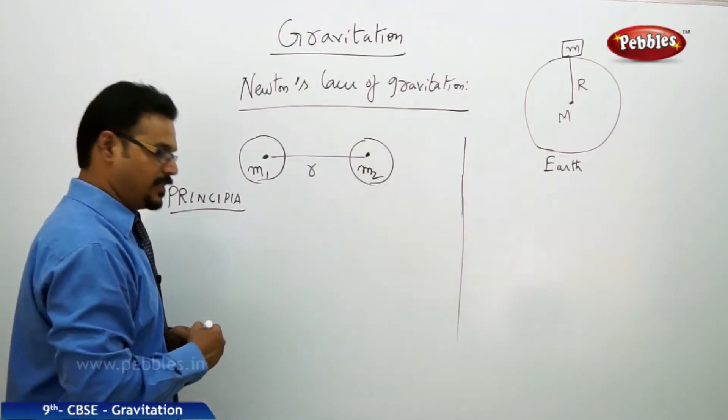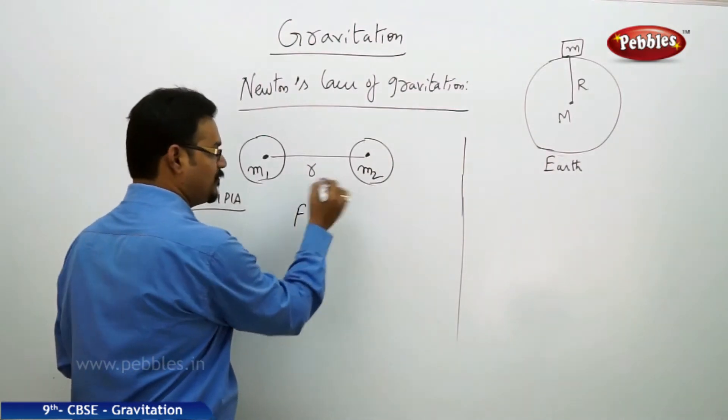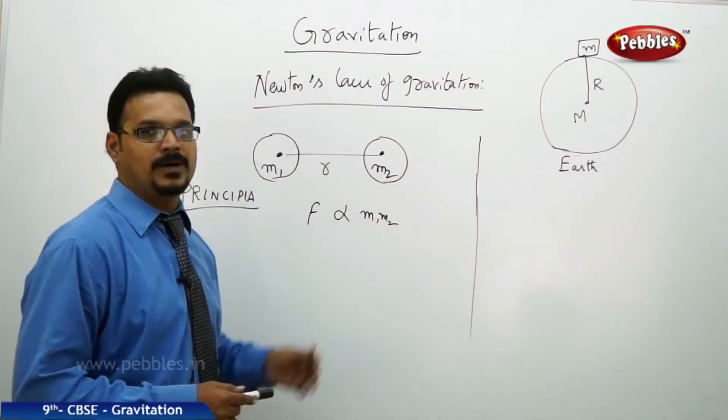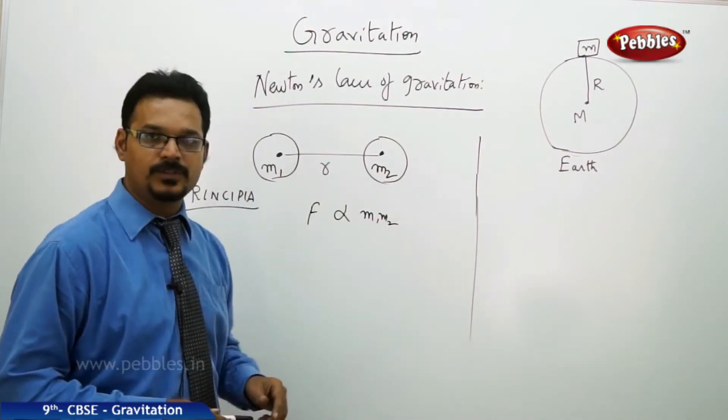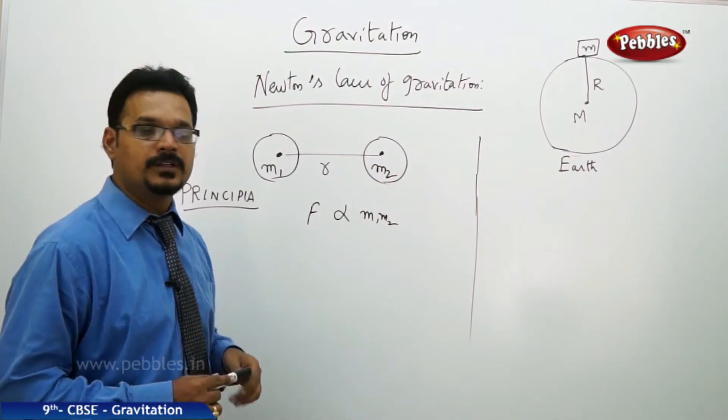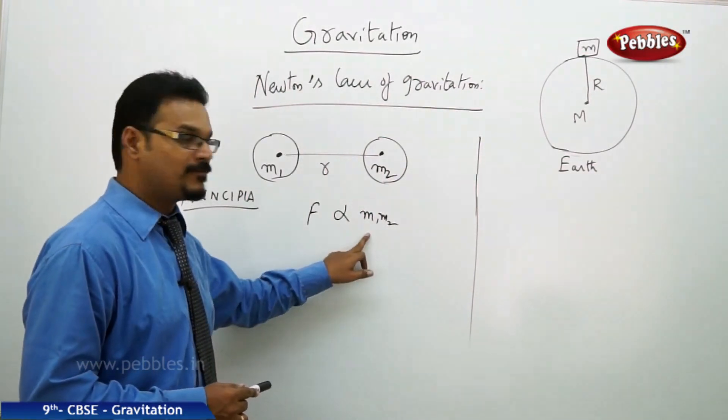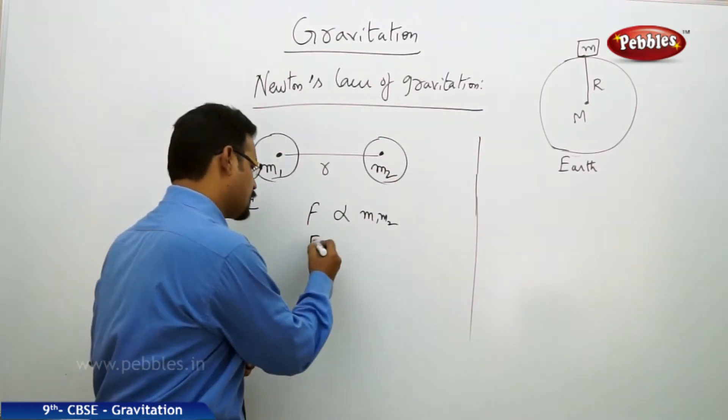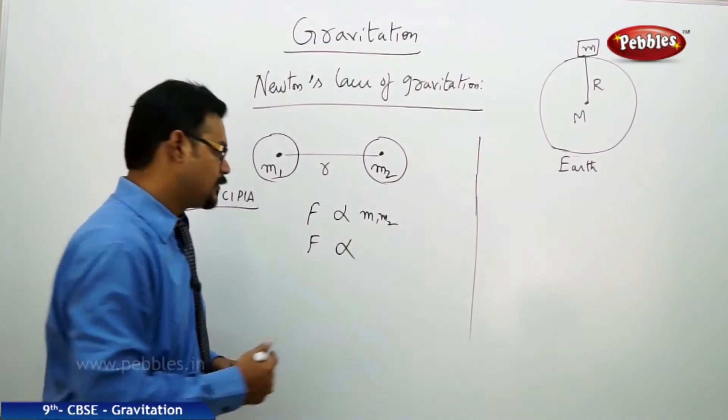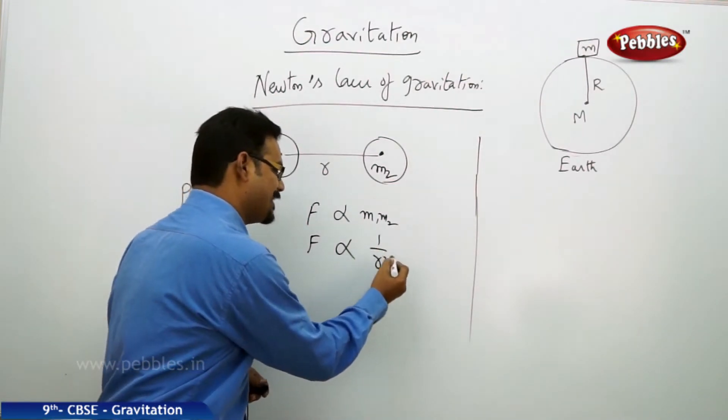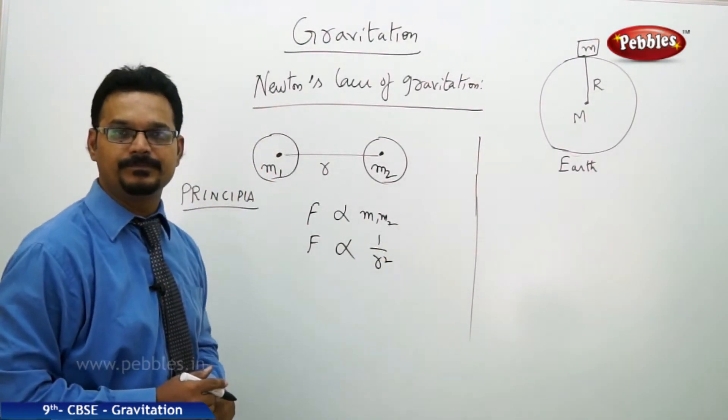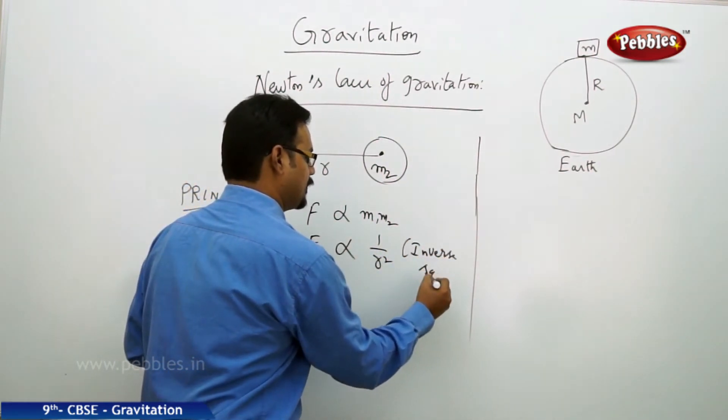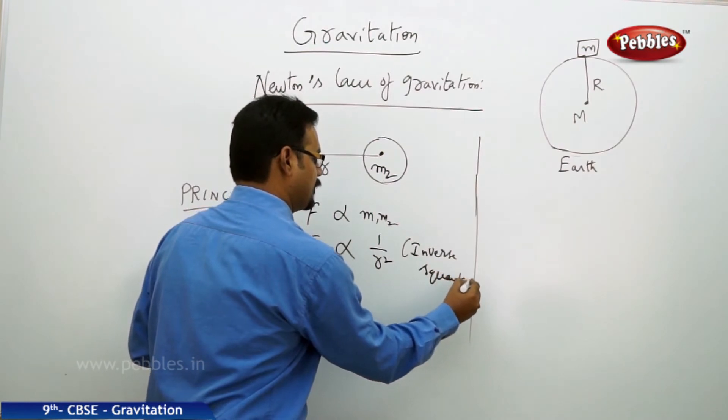Isaac Newton mentioned that the force acting between them, F, is the force of gravitation between two massive bodies m1 and m2. According to Newton, this force is directly proportional to the product of masses m1 and m2.